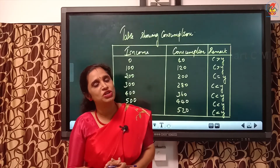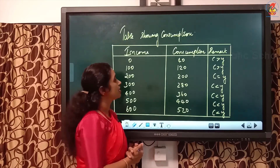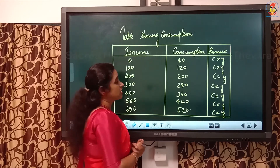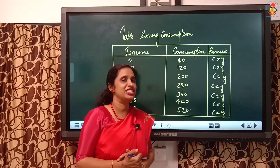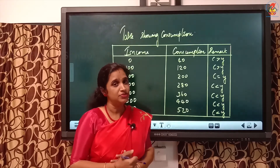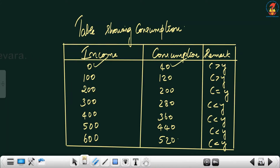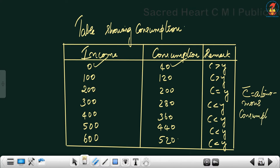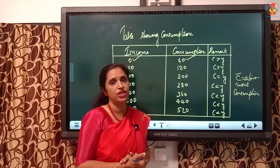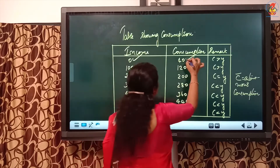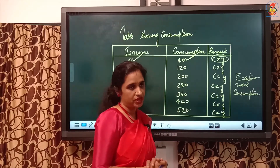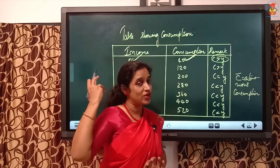The consumption function can be explained with the help of a table showing income, consumption, and remarks. At zero level of income, the consumption is 40. This term C-bar represents autonomous consumption — even at zero level of income there is a minimum level of consumption people need to survive. The remark there is C is greater than Y, and the consumer may have drawn from past savings.